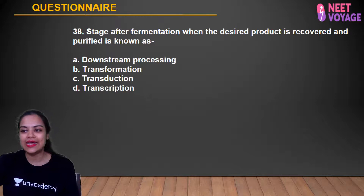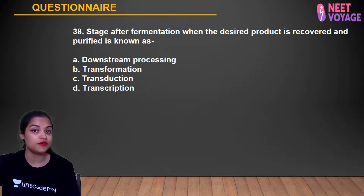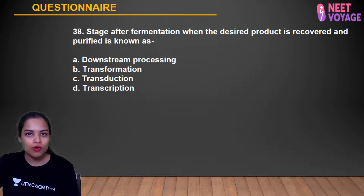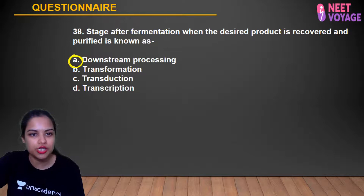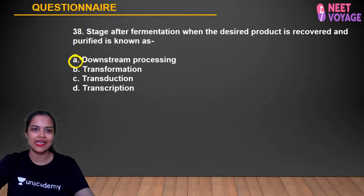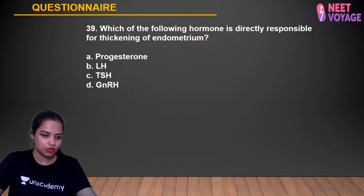Question 38: The stage after fermentation when the desired product is recovered and purified is called what? In recombinant DNA technology, the last process is the downstream processing — where the product is purified, recovered, and made ready for the market. A is the right answer. Anshika, Sabah, Anusha, Samreen, and Simran gave the correct answer.